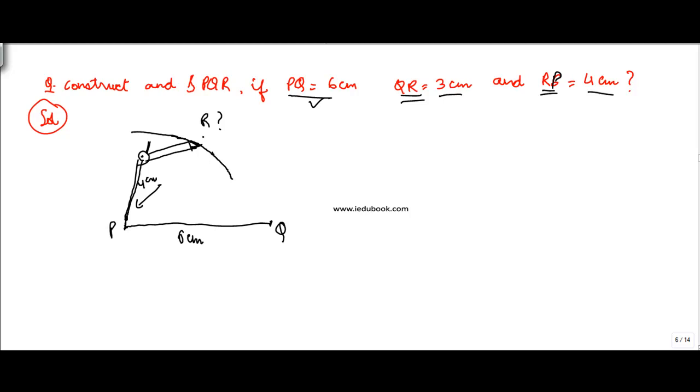So the entire arc that we have cut out here is at a distance of 4 centimeters. But we need to locate the point R where the distance is 3 centimeters from Q, because we know that QR is equal to 3 centimeters.